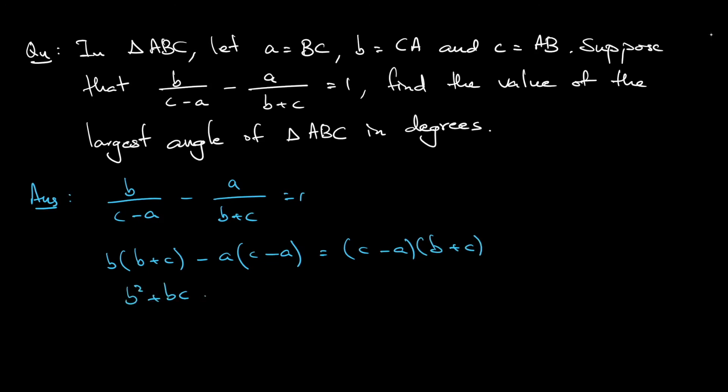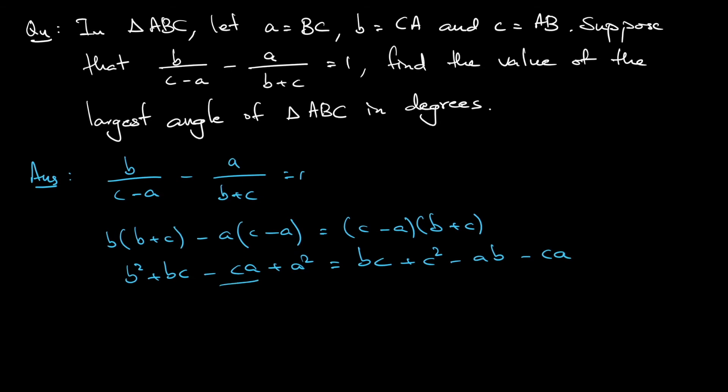So b² + bc - ca + a² = bc + c² - ab - ca. Okay, -ca and -ca cancel, +bc, bc cancel. Alright, so I still have a² + b² on the left hand side. The right hand side, I still have c² - ab.